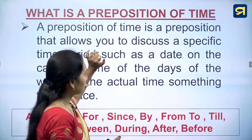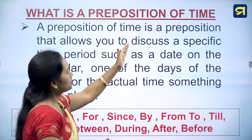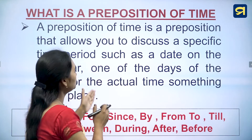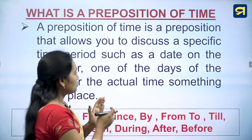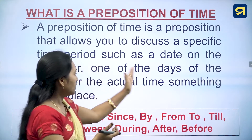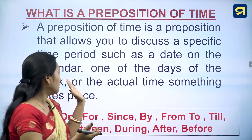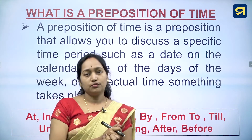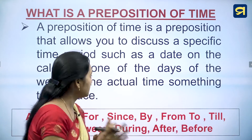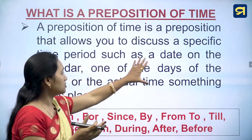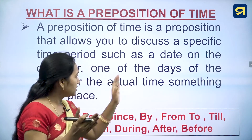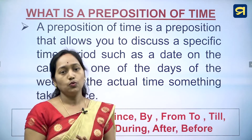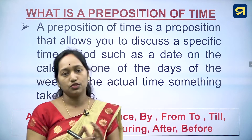Prepositions of time. What is a preposition of time? A preposition of time is a preposition that allows you to discuss a specific time period such as a date on the calendar, one of the days of the week, or the actual time something takes place.